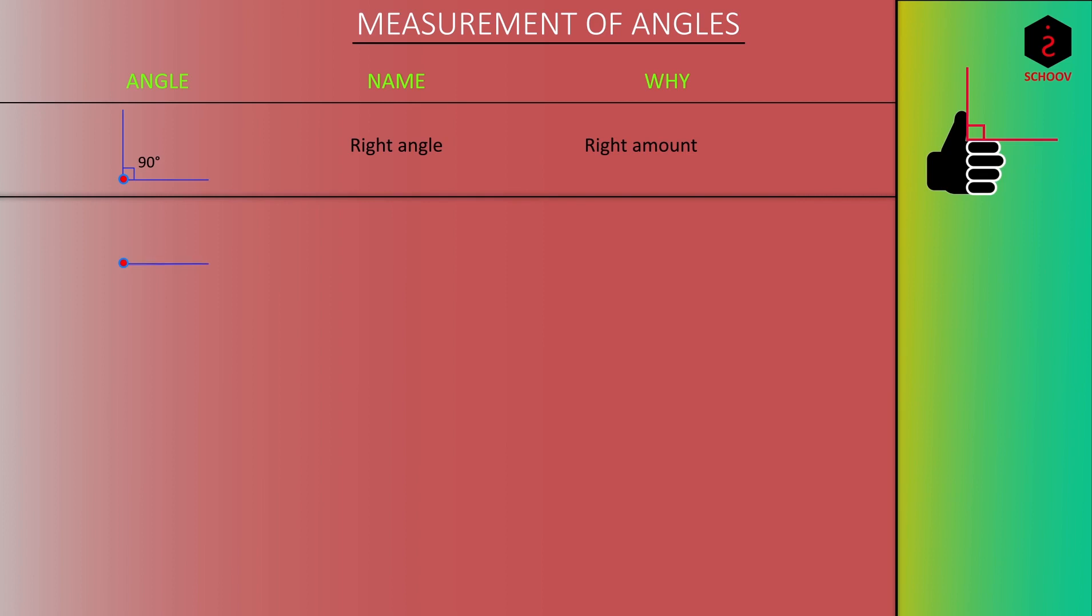Next is any angle between 0 and 90. It is called an acute angle because acute means sharp or high. And angles between 0 and 90 are very sharp. For example, if somebody has an acute fever, the thermometer reading will be high.